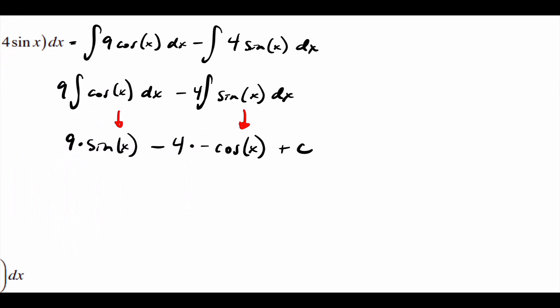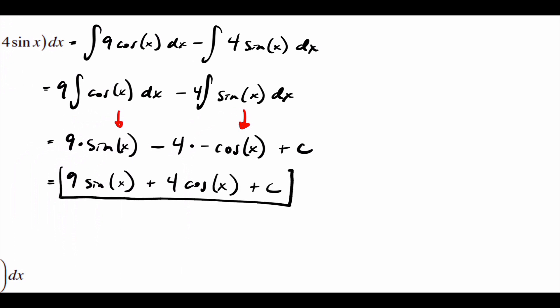Working out the signs — nine times sine of x, then negative times negative gives plus, so it's nine sine of x plus four cosine of x plus C.